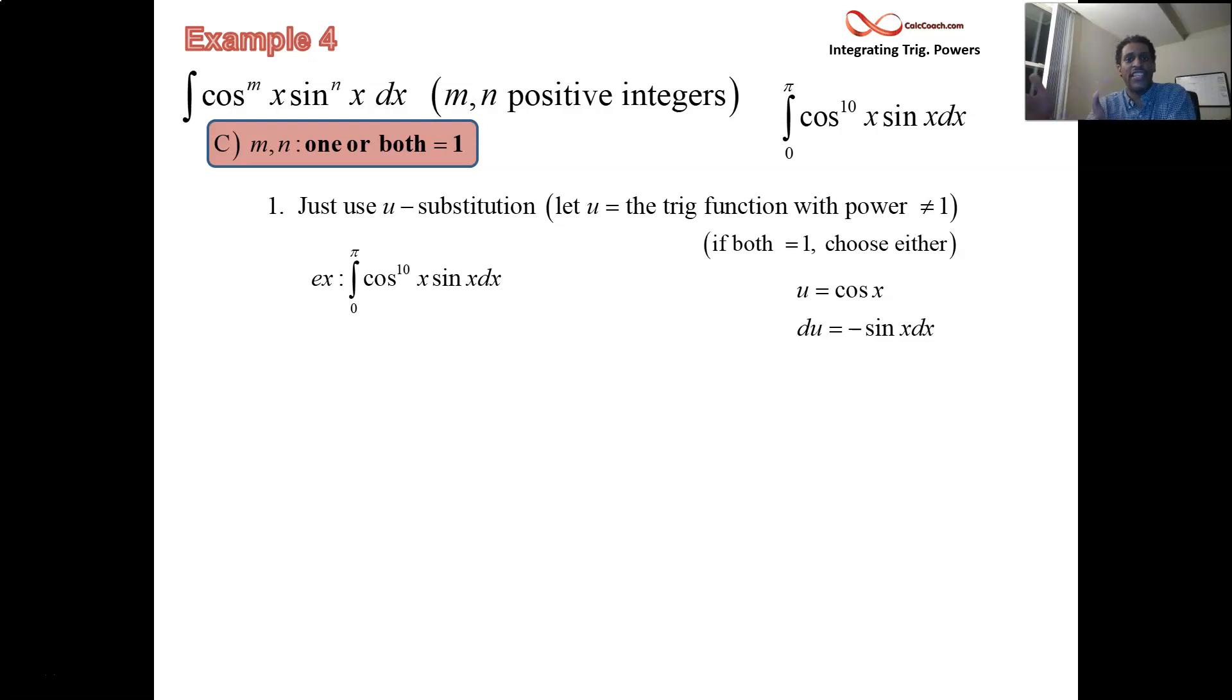Because its derivative is already sitting there on the outside. Not exactly its derivative, but some multiple of its derivative is there. Cosine's derivative is negative sine x. And so negative DU is going to take the place of sine x dx. U is then going to be raised to the 10th. That's a nice, simple integral. That's power rule in reverse. U to the 11th over 11. Keep that negative guy there.